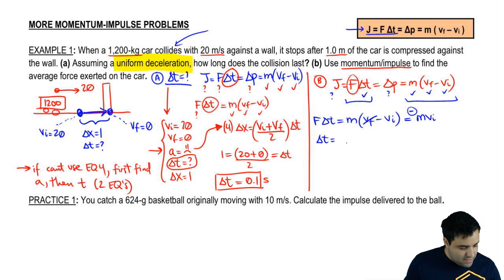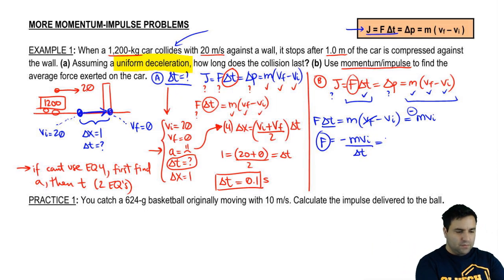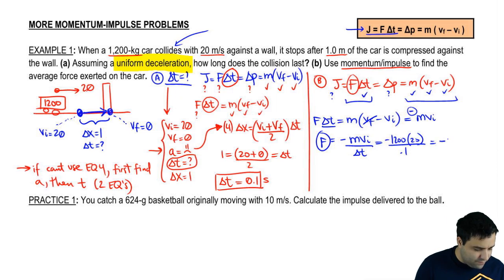Okay, so F delta t equals negative m v. F is what we're solving for. Delta t goes under. It looks like that. So if you plug in these numbers, I have it here. If you plug in these numbers, you get a really big number actually. So 1,200, initial velocity 20, this is 0.1.